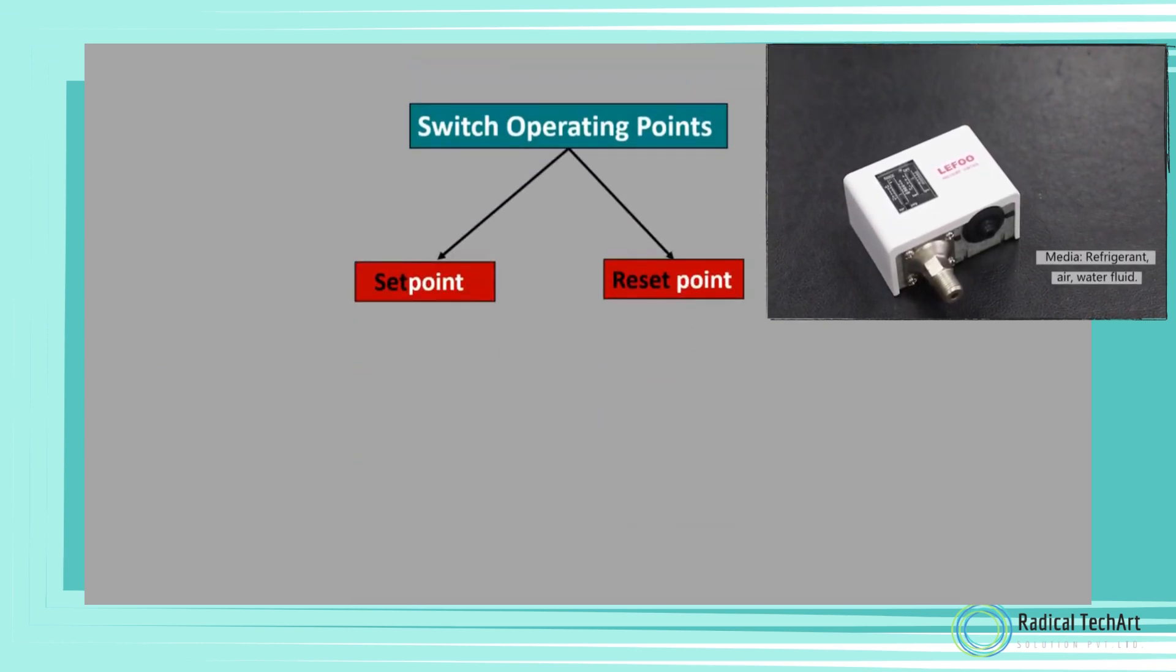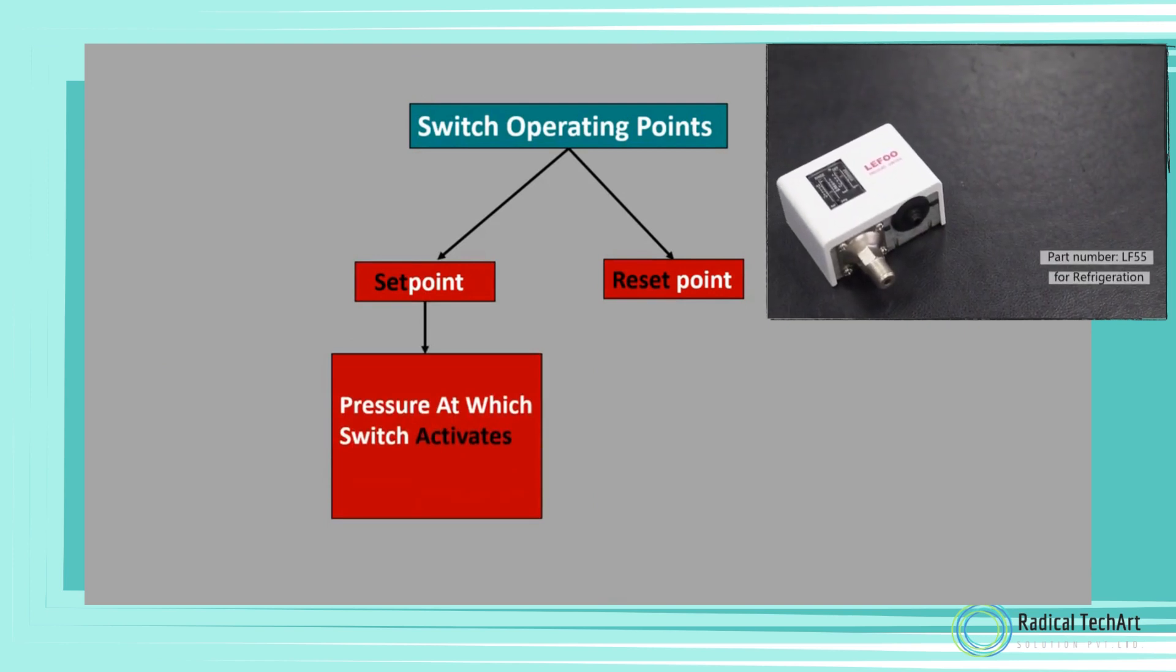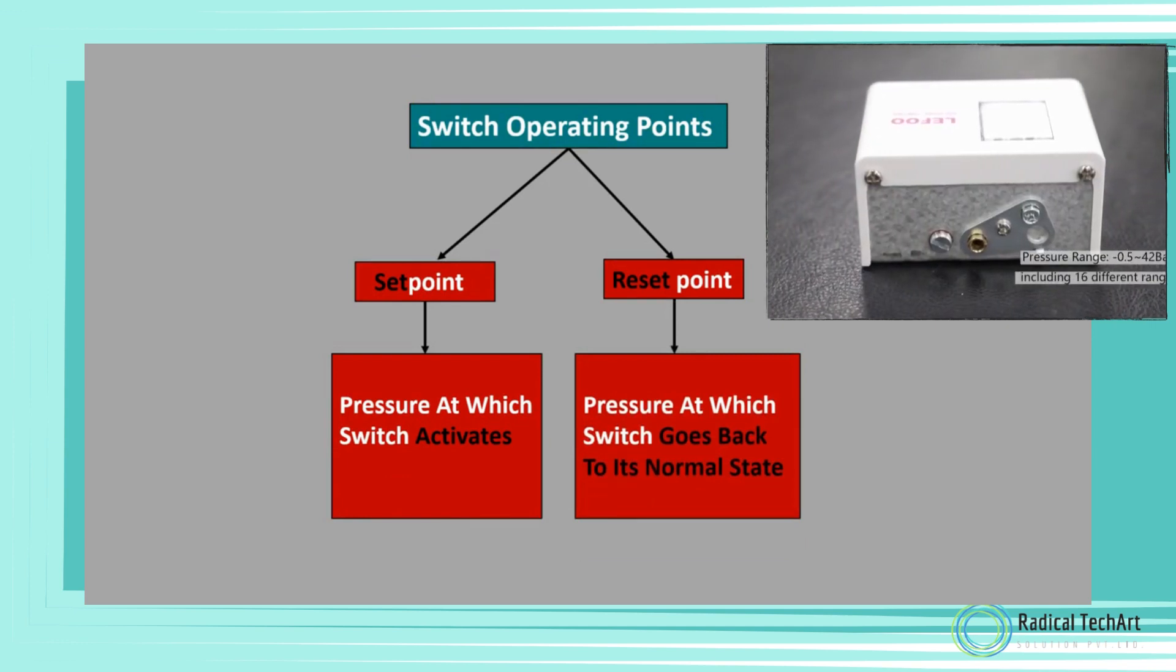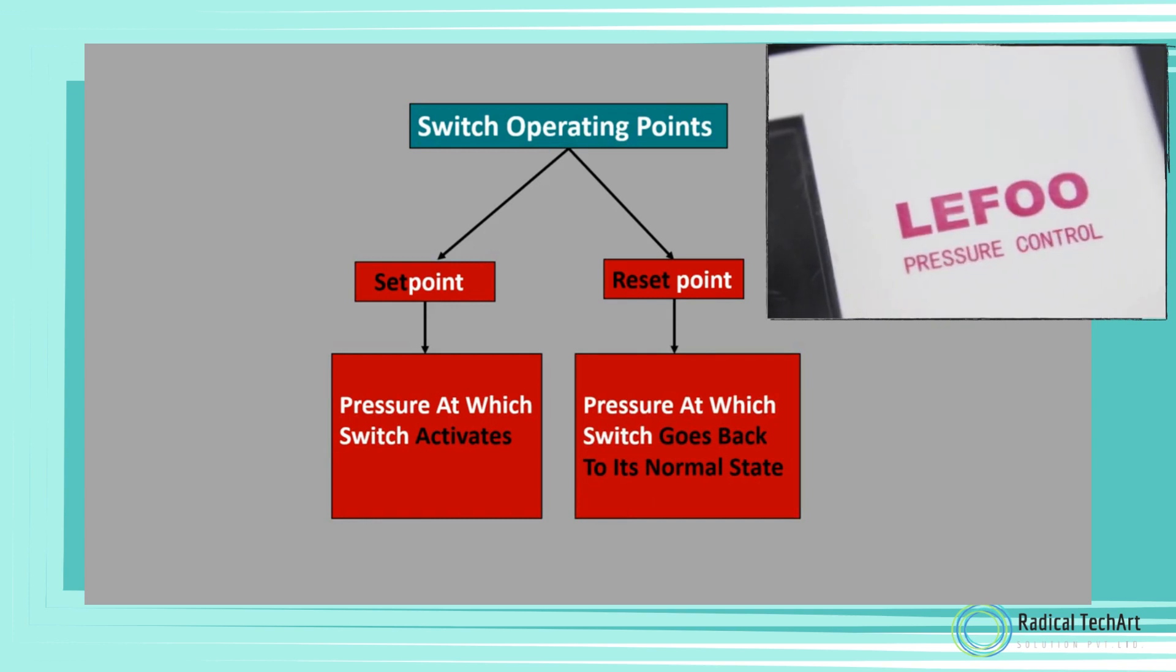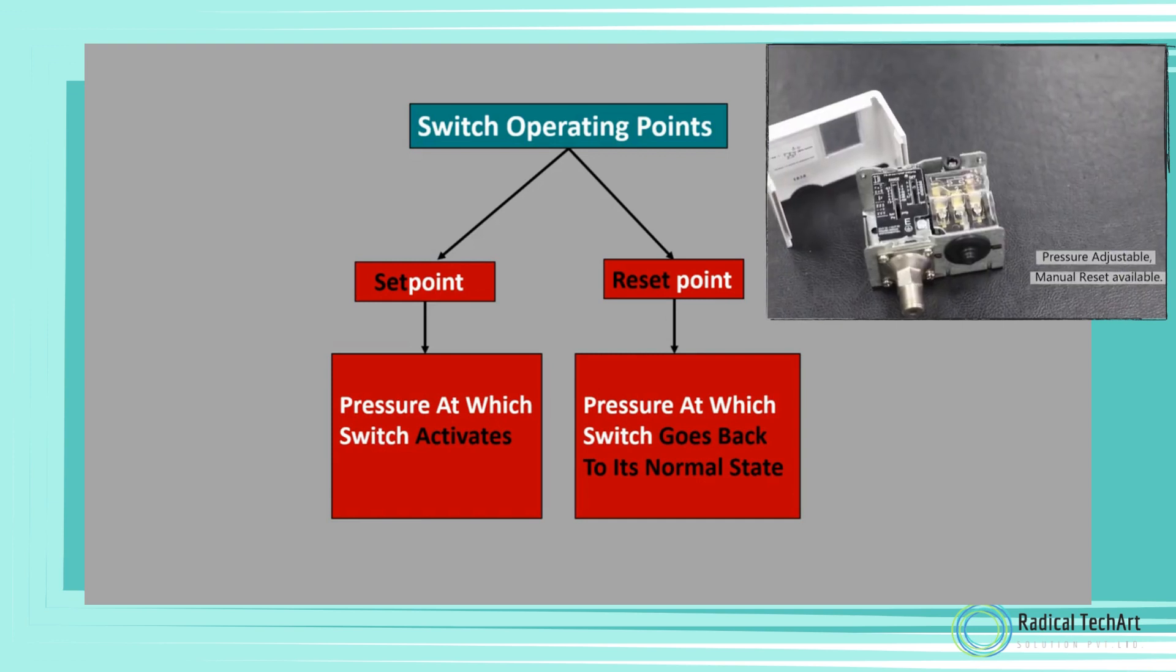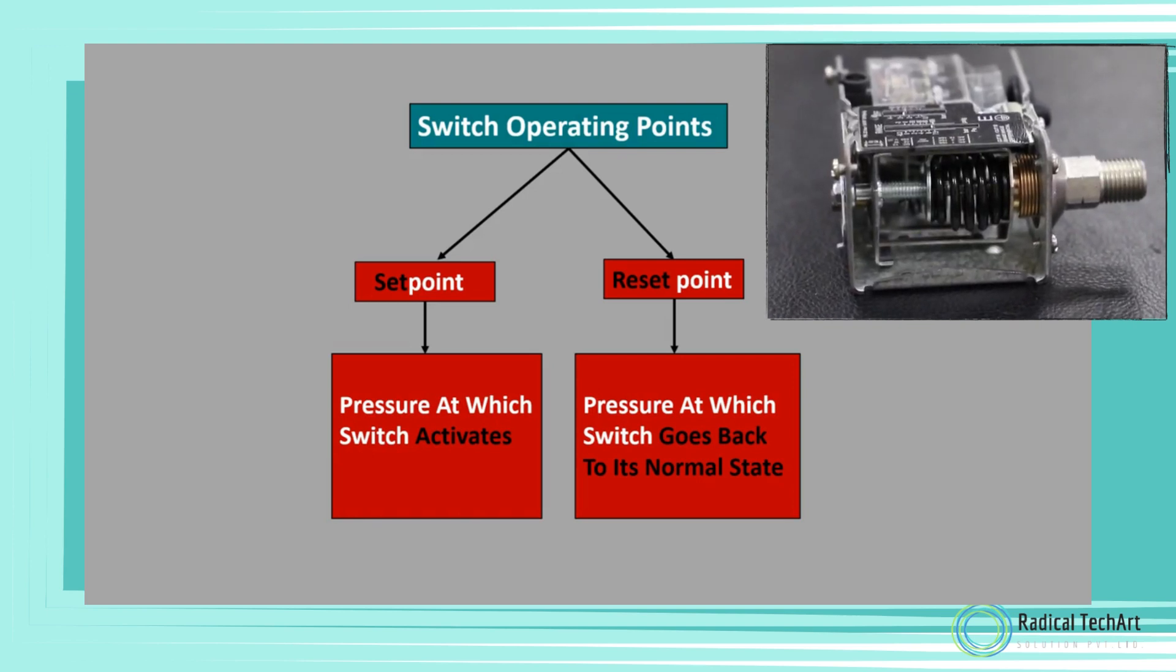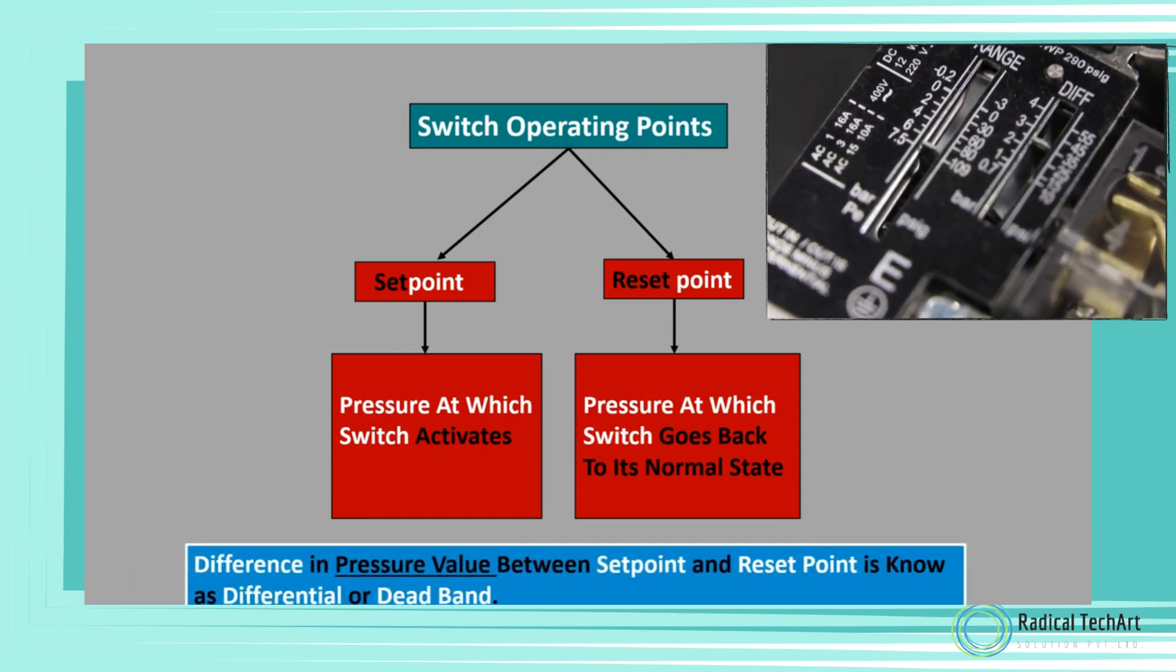All pressure switches have two operating points known as setpoint and resetpoint. Setpoint is the pressure at which the switch activates, and the resetpoint is the pressure at which the switch goes back to its normal position. The variation in pressure does not change the status of the switch until the setpoint is reached. When the setpoint is reached, the switch changes its state from NO to NC or NC to NO and remains in the changed state until the pressure drops below the resetpoint.